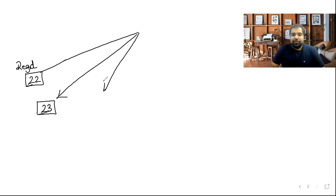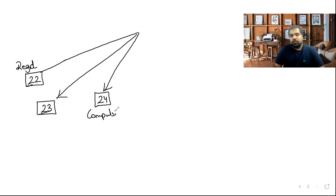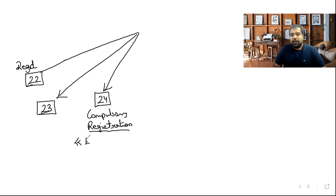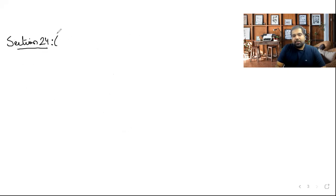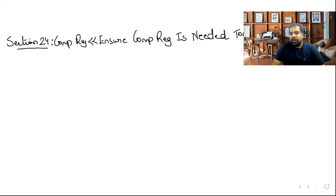Section 24 is compulsory registration — you don't wait for your turnover to cross 20/10/40 lakhs; the moment you do any of these things you must compulsorily register. The shortcut: 'Ensure Compulsory Registration Is Needed, TONAI' — there's a person called TONAI and they're asking him to ensure compulsory registration.